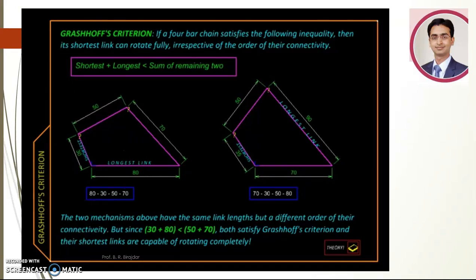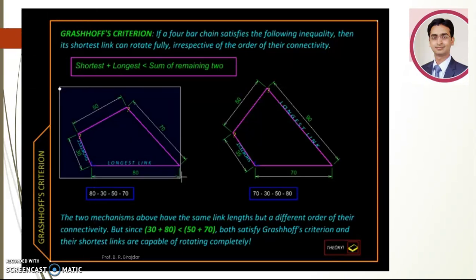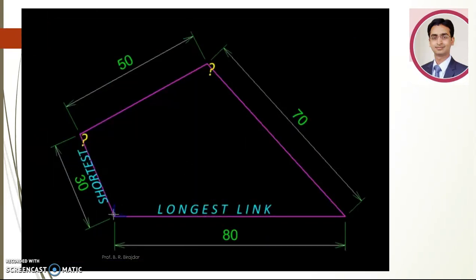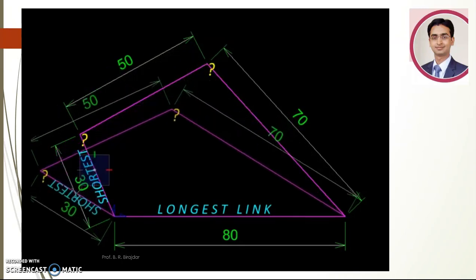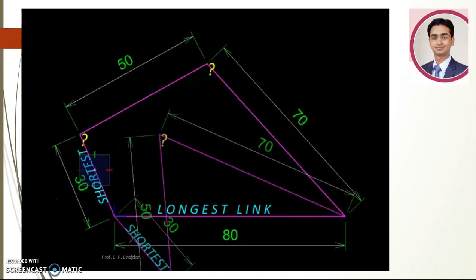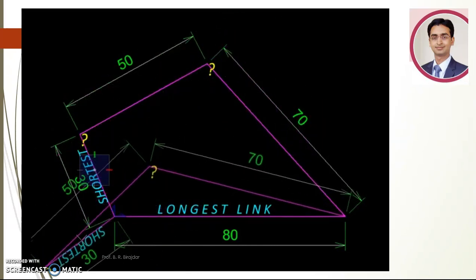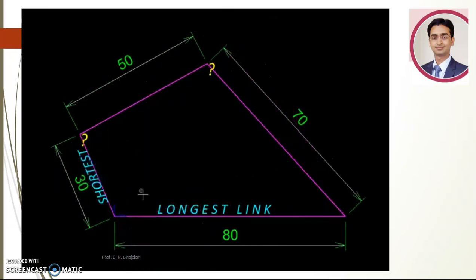Here is one such mechanism. Let us test it. So the shortest link and the longest link add up to 30 plus 80 equal to 110. And the other two links, 50 plus 70, add up to 120. So Grashof's criteria says we should have a crank here. So let us test by actually dragging on one of the links here, the shortest link. And indeed it is capable of complete rotation.